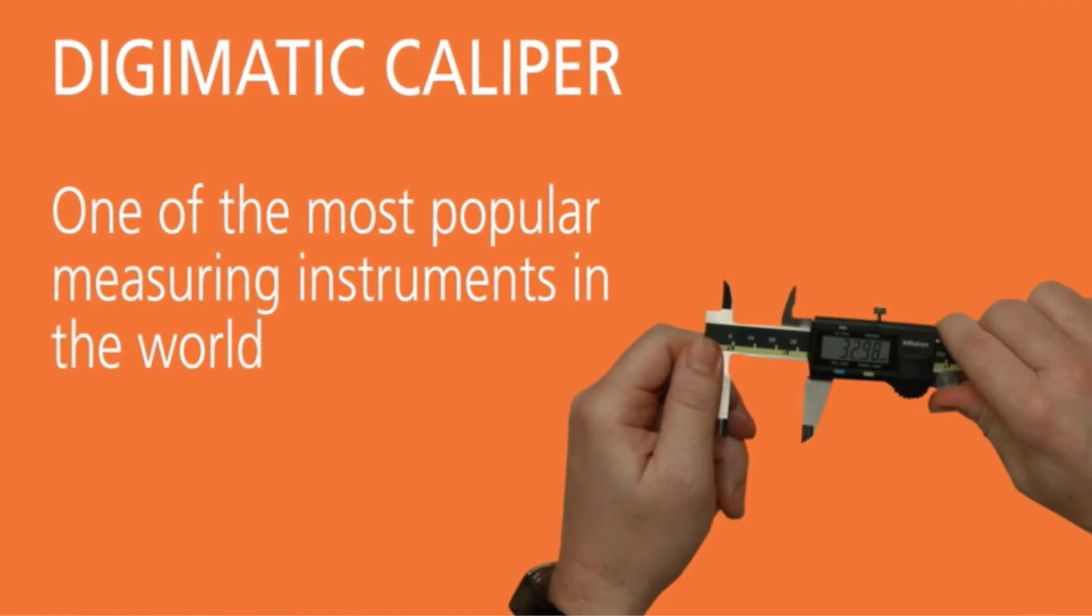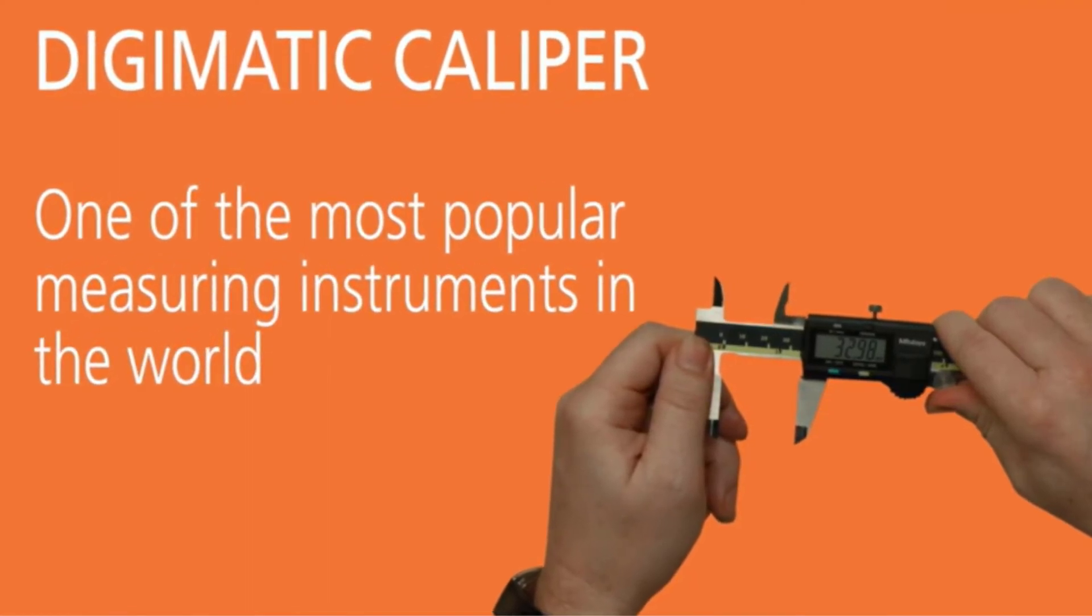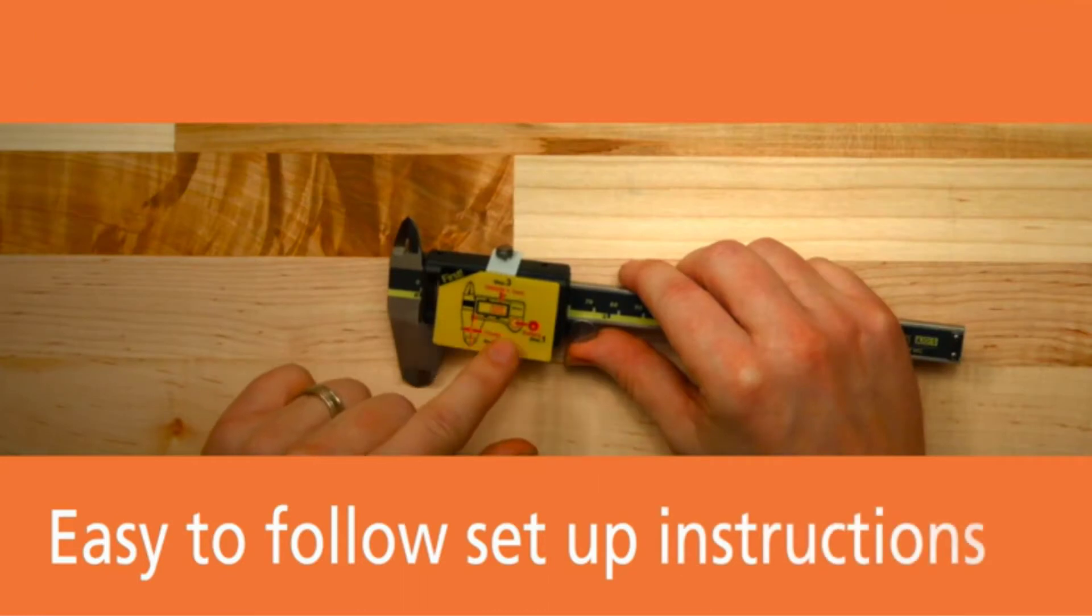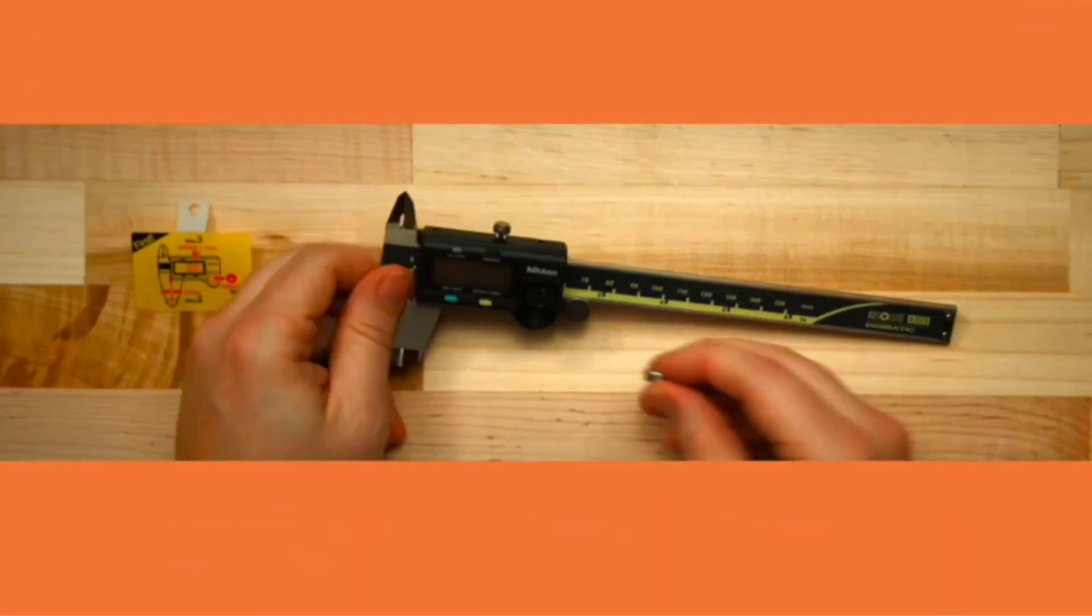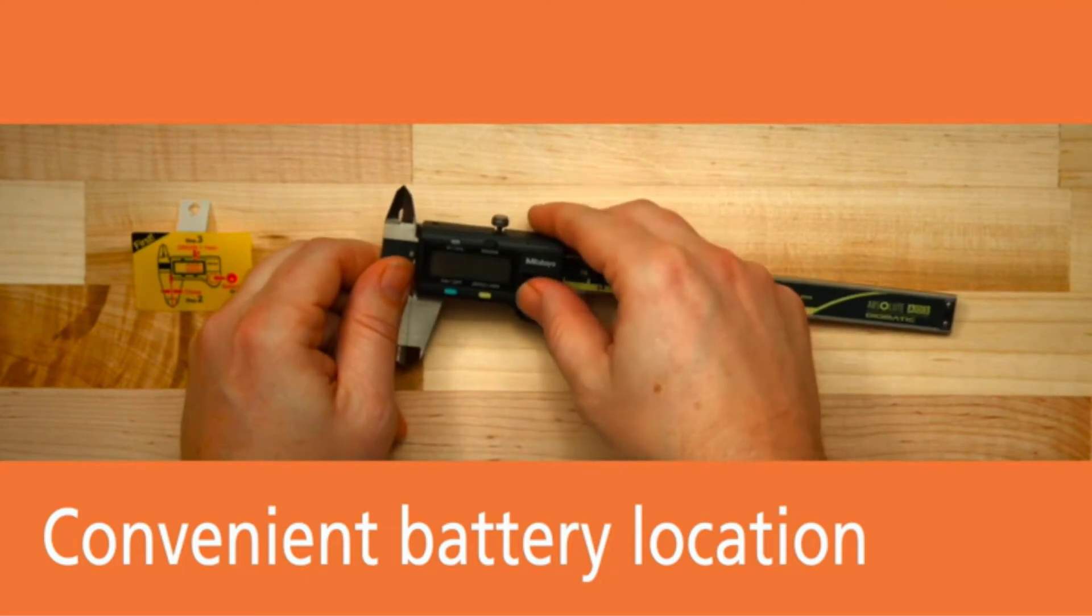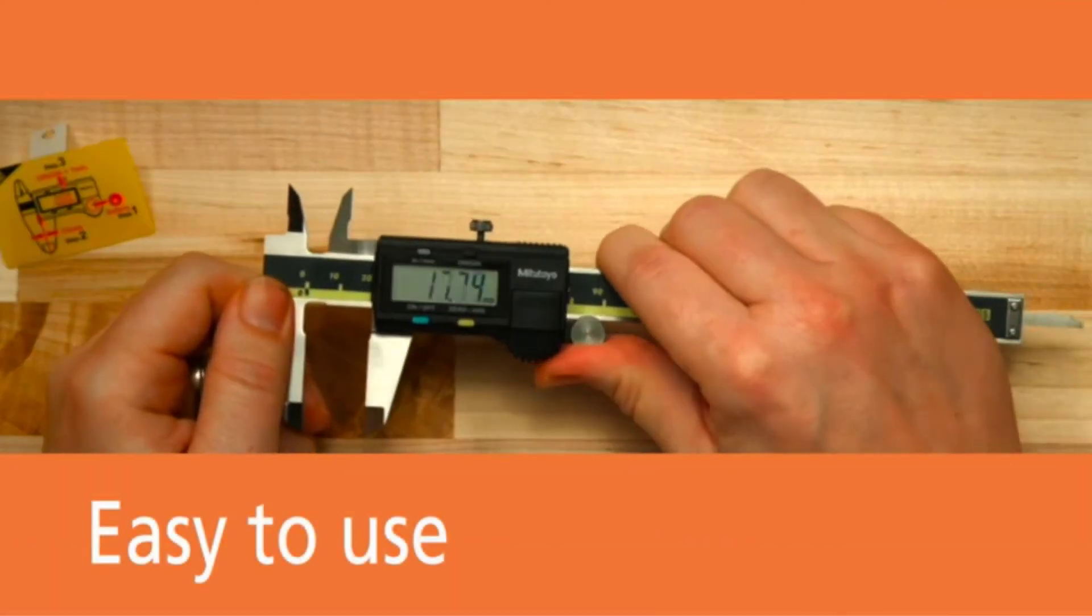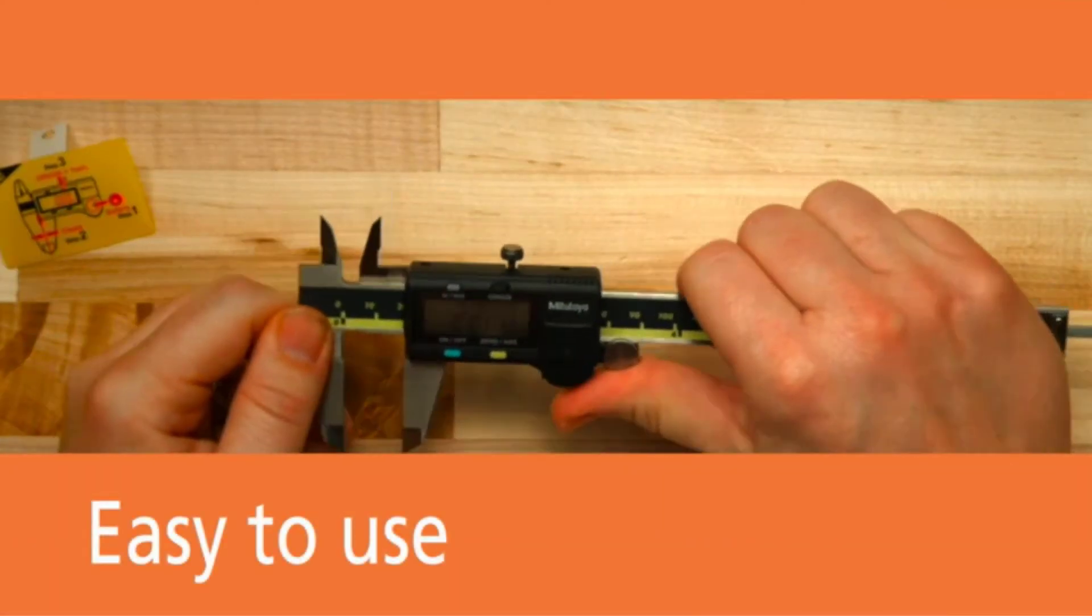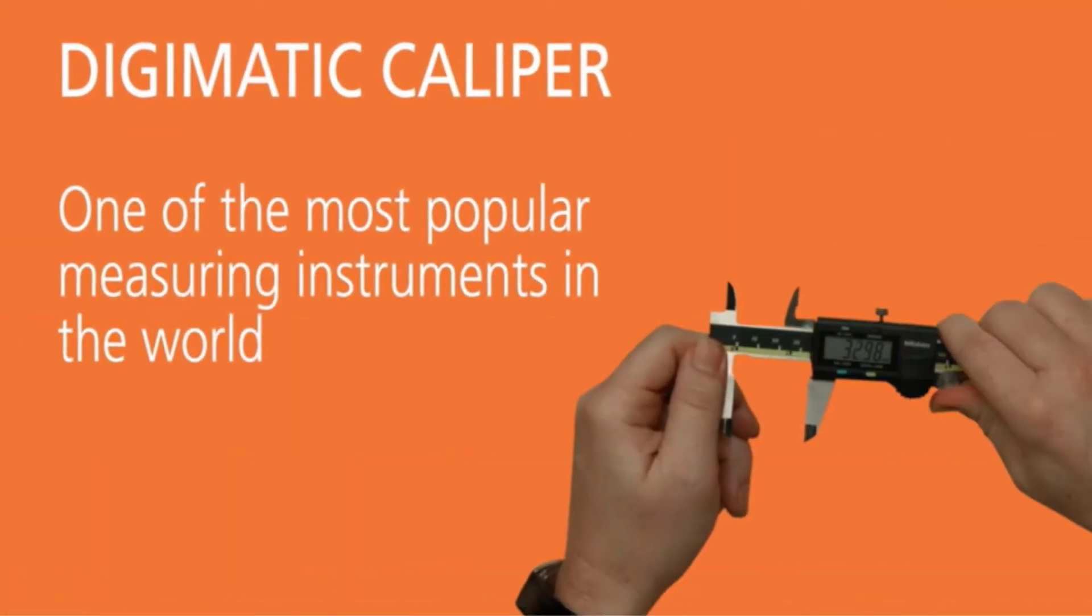Pros: Large Digital Readout LCD Screen, versatile measurements, resistant to water, oil, and dirt, thumb roller, includes a protective case. Cons: Reading screen may scramble with extended use.